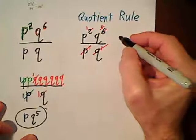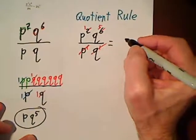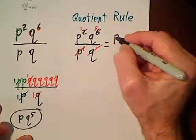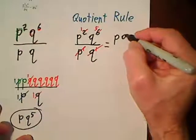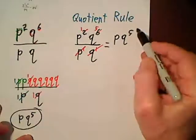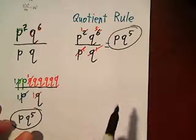So we end up with, I guess I'll keep going sideways, P to the first power, Q to the fifth. Sort of an easier way to go.